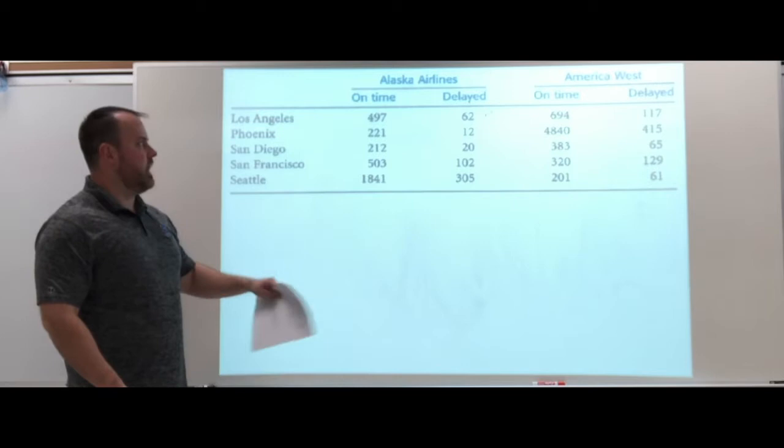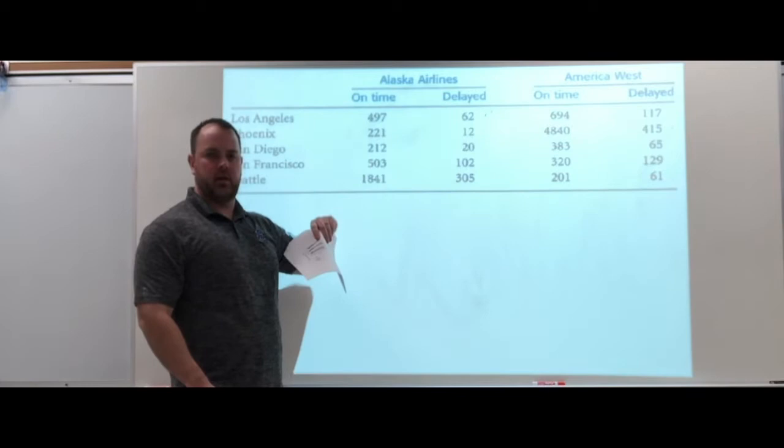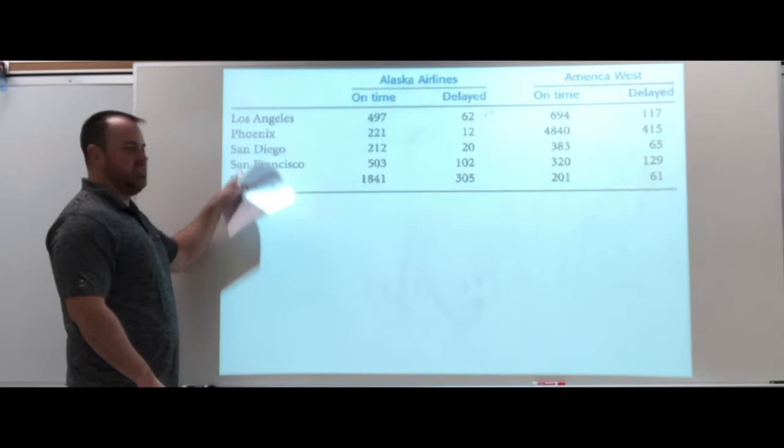We have airline information. We have two variables up top. We have Alaska Airlines and America West, so we have the type of airline and we have on-time and delay for each one of those airlines.